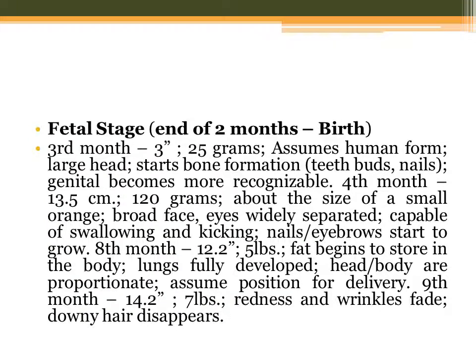Next is the fetal stage — from the end of two months until birth. After fertilization, the egg becomes an embryo and then a fetus. On the third month, the fetus is three inches and 25 grams, assumes human form, has a large head, bone formation starts, and teeth buds, nails, and genitals become more recognizable. By the fourth month, it is 13.5 centimeters and 120 grams — about the size of a small orange — with a broad face and eyes widely separated.